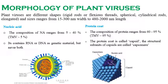Understanding the morphology of plant viruses is very important for understanding their chemical structure and nature. Viruses may be rigid rods, flexuous rods, spherical, or cylindrical. The size ranges from 15 to 300 nanometers in width and 480 to 2000 nanometers in length.